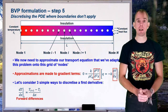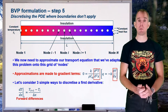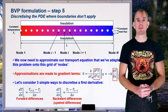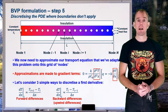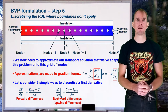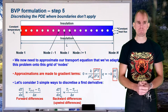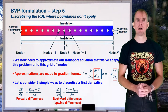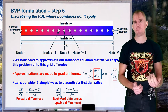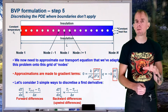If we turn 180 degrees from i+1, we see node i−1. Another approximation is the backward difference: (T_i − T_{i−1}) / Δx. This also approximates the temperature gradient at node i. This is sometimes called an upwind difference, which has very important physical meaning that we'll discuss in a few lectures' time.